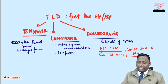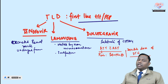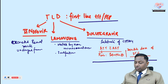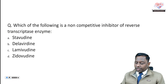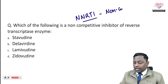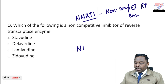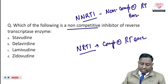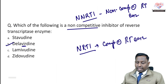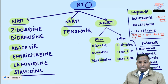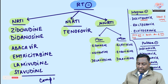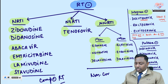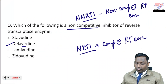So in the TLD regimen, only dolutegravir's dose is increased, not tenofovir or lamivudine. The question asks: which of the following is the non-competitive inhibitor of reverse transcriptase? NNRTIs are non-competitive inhibitors of reverse transcriptase. NRTIs are competitive inhibitors. So you need to find which option is an NNRTI — delavirdine is the NNRTI here; the rest are NRTIs. NRTIs are competitive inhibitors; NNRTIs are non-competitive inhibitors of the reverse transcriptase enzyme.